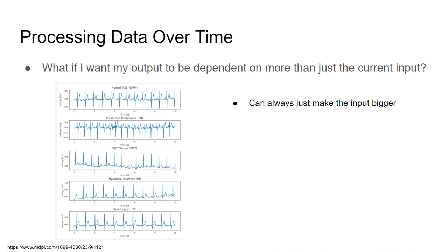We have to be a little careful here, because this is only a problem if the input to the system is just whatever I'm measuring right now. If I wanted to, I could always just say the input to my system is not just what I'm measuring right now, but also all the data over the last second, two seconds, or four seconds — some amount of time into the past. That's my input to my network right now. If I want to go that approach, fine — ignore all the stuff in this lecture. My output is still dependent on my input; my input is just bigger.